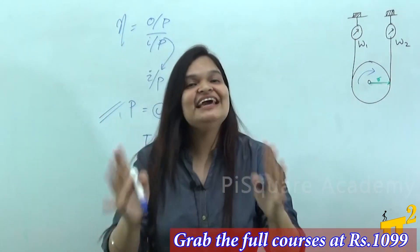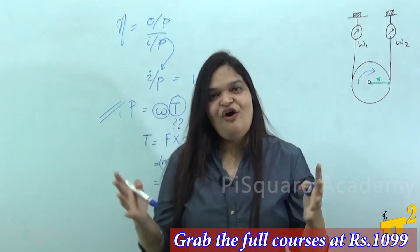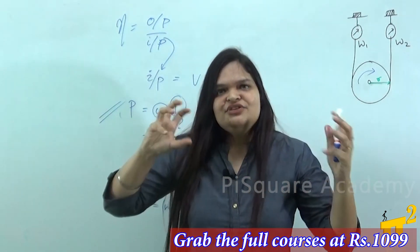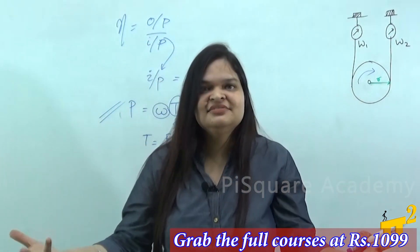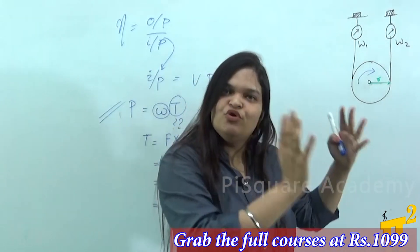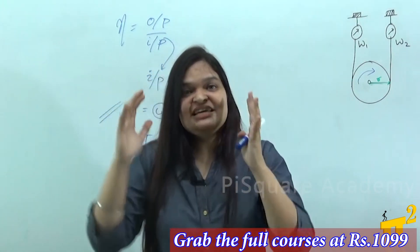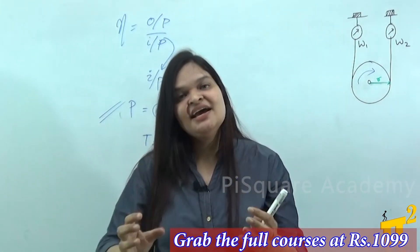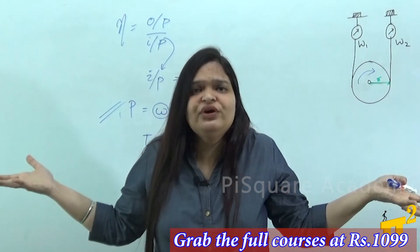If you know the output power at any load, you can simply put output by input to get the efficiency of the electric motor at any load. This is how you calculate the efficiency of the electric motor. You give some input, you get some output, and that output is used for something. The motor takes electrical energy and gives mechanical output, which is then used somewhere.